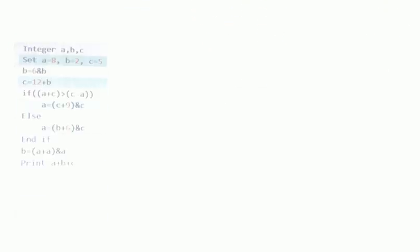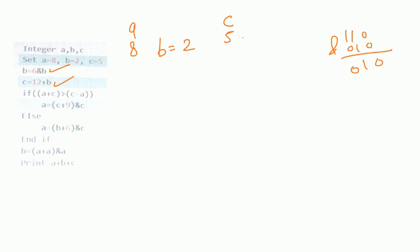The answer is 2 so b = 2. Now a = 8 and c = 5. b plus c equals 12 plus b, so c equals 14. Then a plus c equals 22. 22 is greater than c minus a (which is 6) — condition is true. So c plus 9: c is 14, 14 plus 9 equals 23.